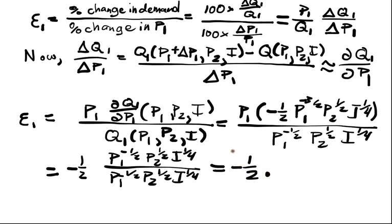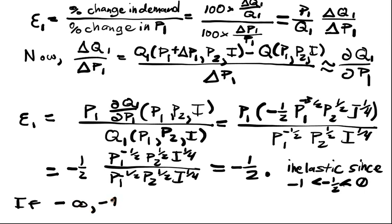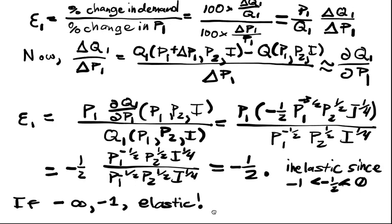So my elasticity for this good with respect to its price is negative one half. Since it's between negative one and zero, I say it's inelastic. If it were between negative infinity and negative one, we would say it's elastic. That would indicate there's a very big change in the demand based upon the price.